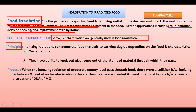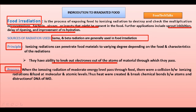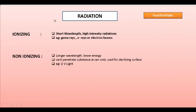The principle of food irradiation is that ionizing radiation can penetrate food materials to varying degrees depending on the food and the characteristics of the radiation. They also have the ability to knock electrons out of the atoms of the material through which they pass. The irradiation process involves exposing food to a specified dose of ionizing radiation inside a biologically shielded radiation chamber. When ionizing radiations of moderate energy level pass through the food, collisions occur at molecular and atomic levels, creating heat that breaks chemical bonds between atoms and causes destruction of the DNA of microorganisms.